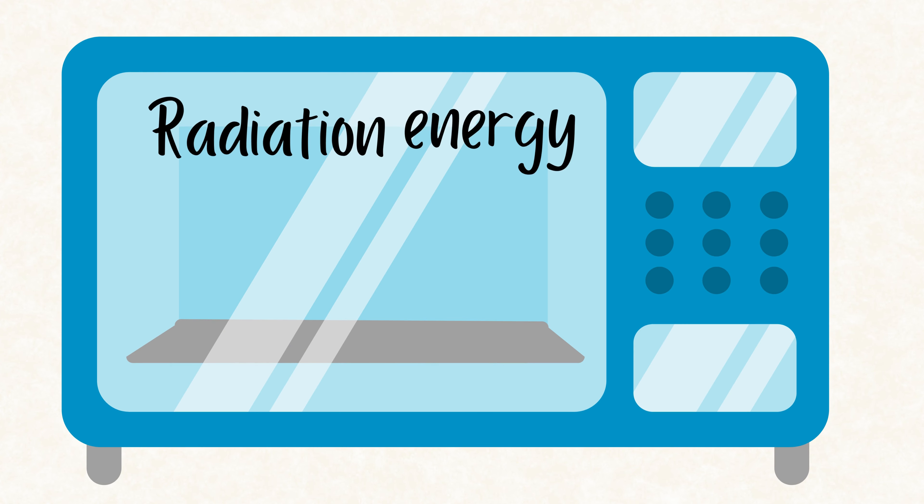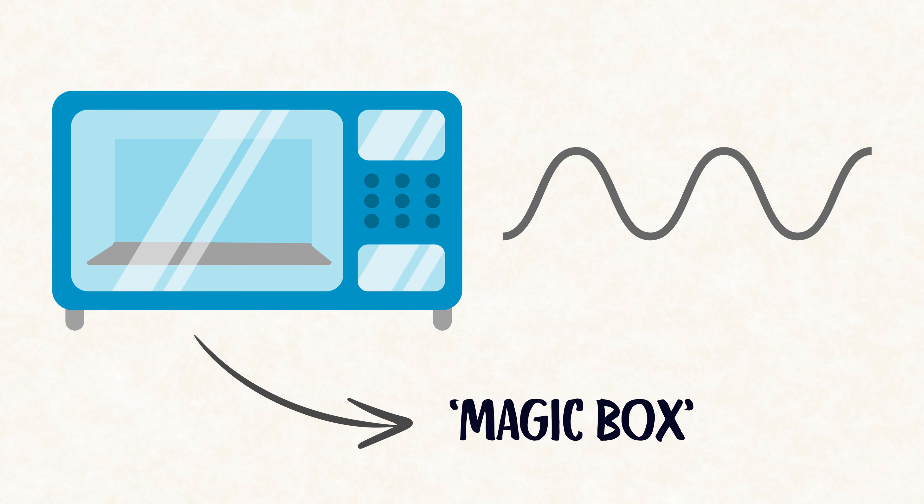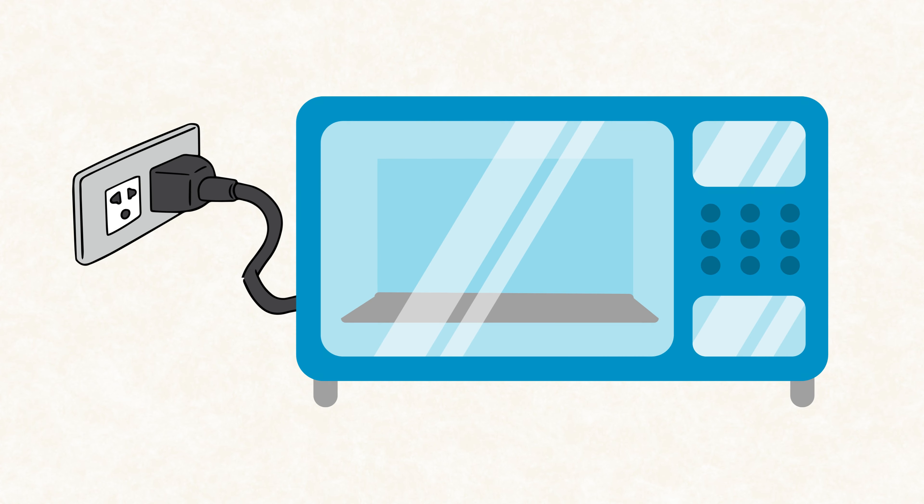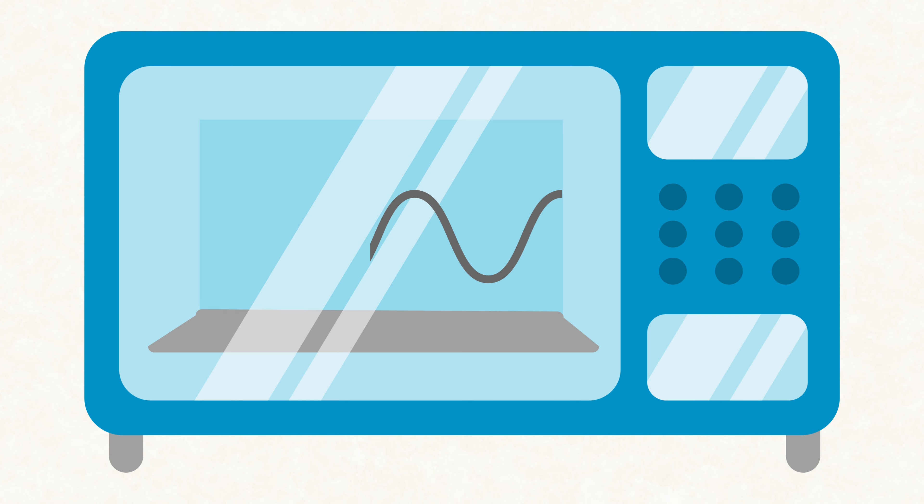Microwaves use radiation energy to heat food by using microwaves, a type of wave in the electromagnetic spectrum. To avoid confusion between the two microwaves, let's call this one the magic box. Using the electrical energy from the power outlet, a device called the magnetron transmits microwaves through the box, which bounce back and forth between the reflective metal walls creating oscillating electromagnetic fields.